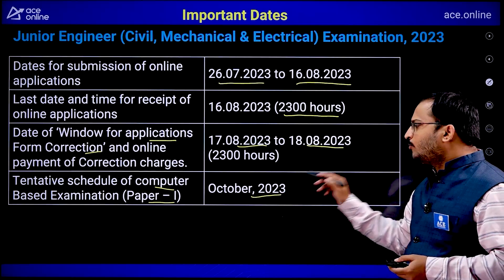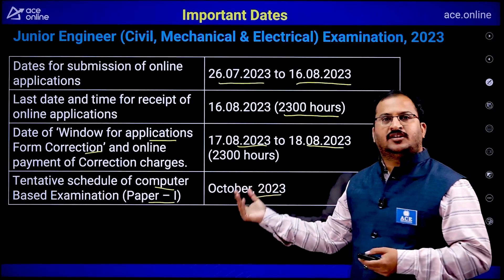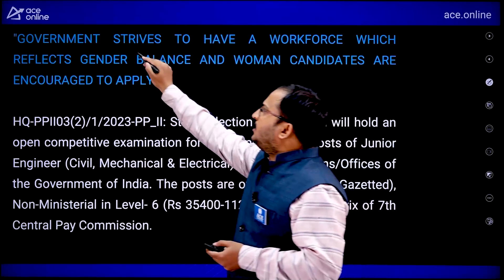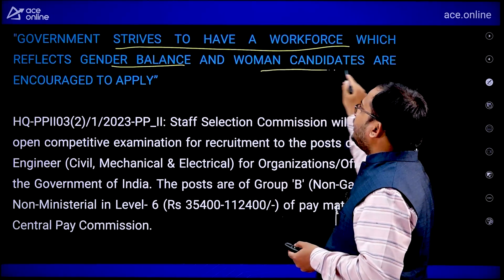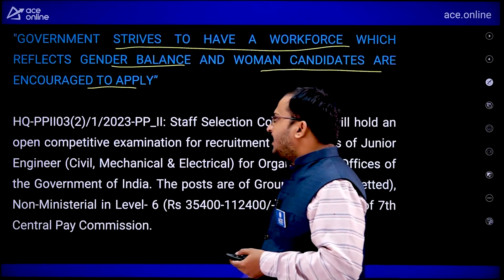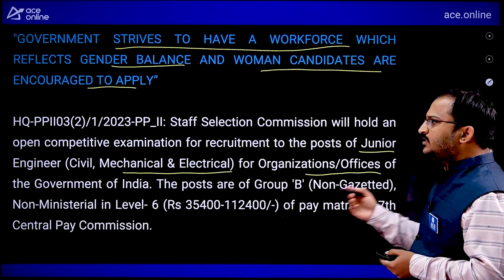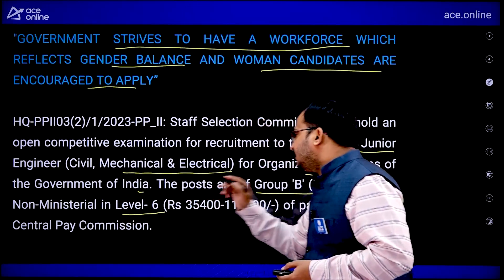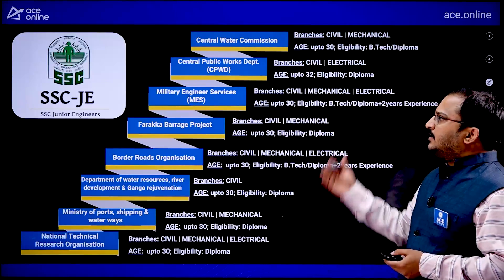The tentative schedule for the computer-based examination Paper 1 is in October 2023 — previously the dates given were October 9th, 10th, and 11th, 2023, though these may be subject to change. An important note in the notification states: 'Government strives to have a workforce which reflects gender balance and women candidates are encouraged to apply.' This competitive examination is for the post of Junior Engineer — Civil, Mechanical, and Electrical — for Government of India organizations, in Group B non-gazetted, non-ministerial posts at Level 6 of the 7th Central Pay Commission pay matrix.